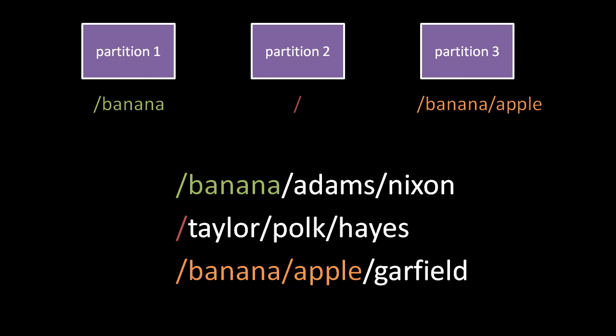Unix systems generally require that a directory already exists before it can be used as a mount point. If the mount directory lists any files, those entries are effectively obscured by the mounting. So when we mount partition 1 to /banana on partition 2, we can no longer access the content of that directory because /banana now resolves to the root directory of partition 1.